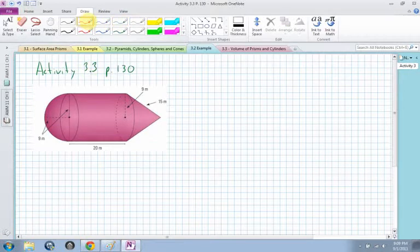So here we have a complex object made up of half a sphere, a cylinder, and a cone. The half sphere is right here. The cylinder is a full cylinder, and then the cone is also a full cone. So there's three different objects that we have to find the surface area for.